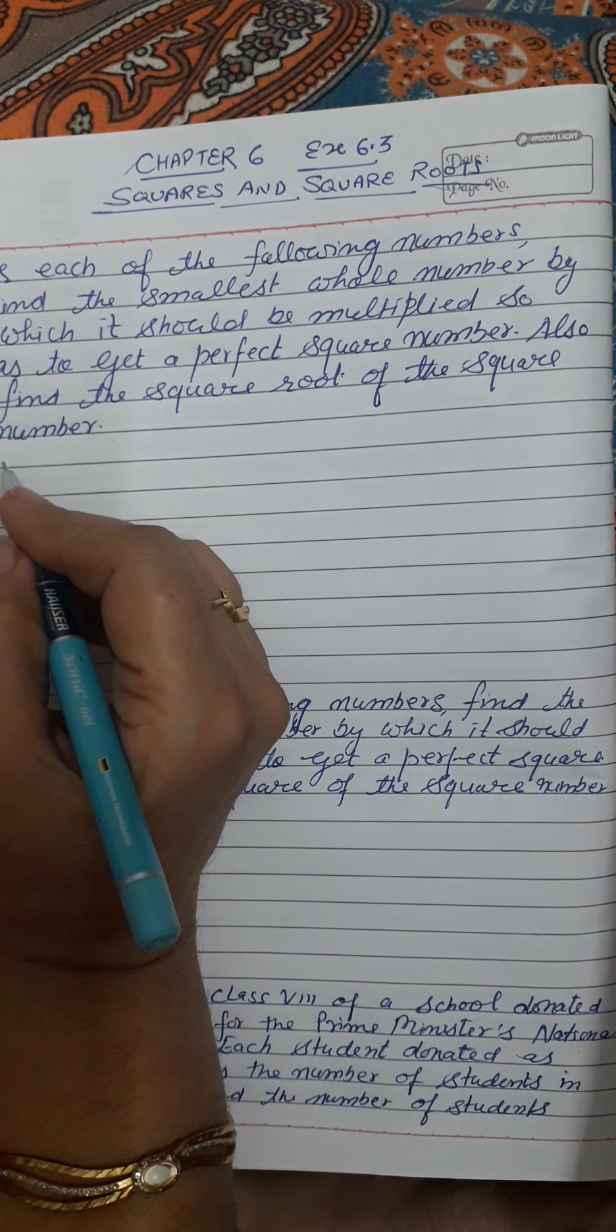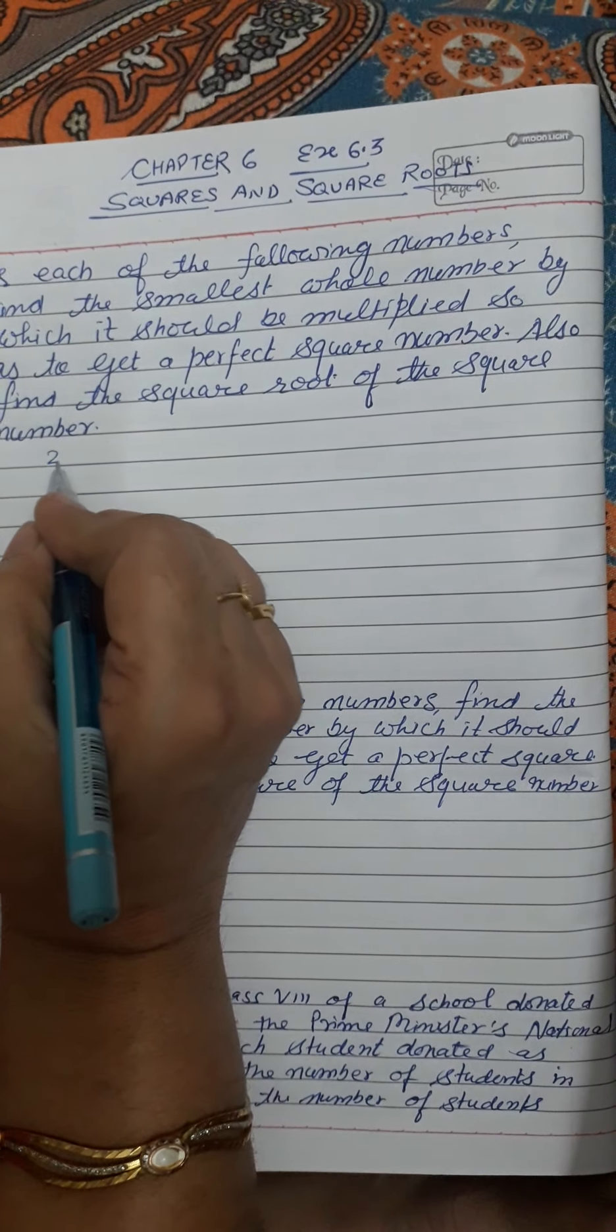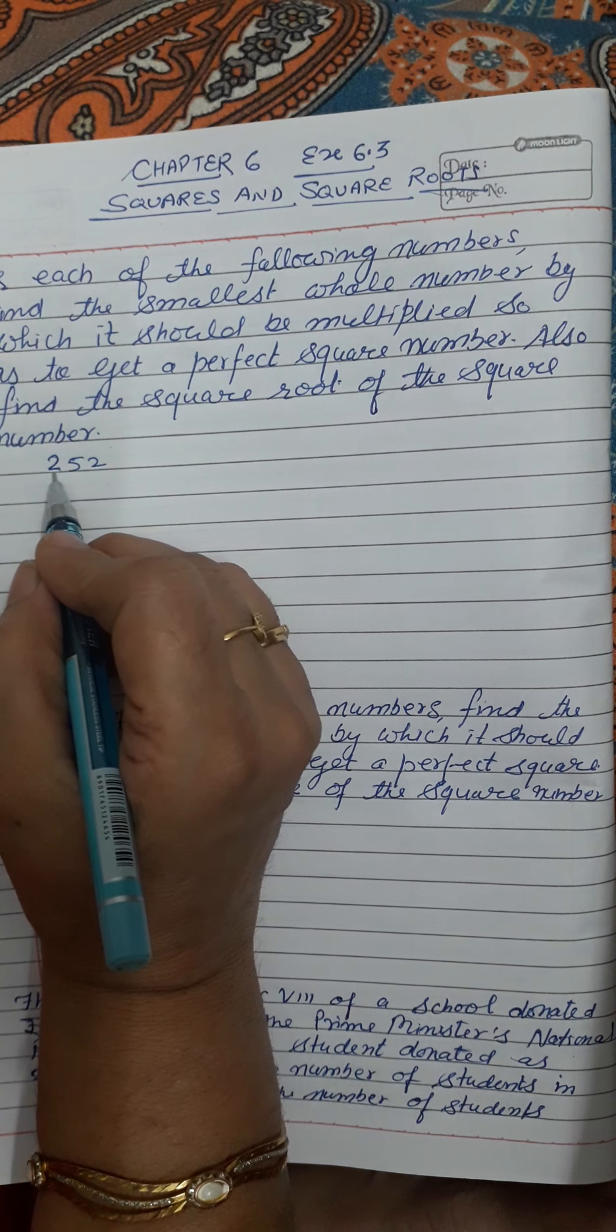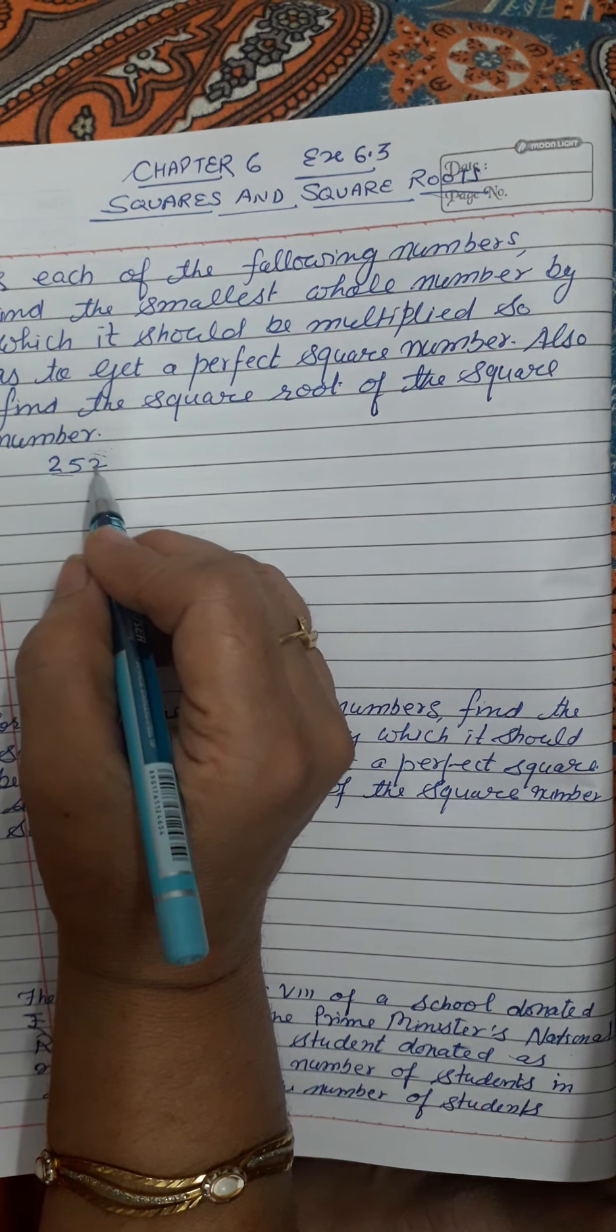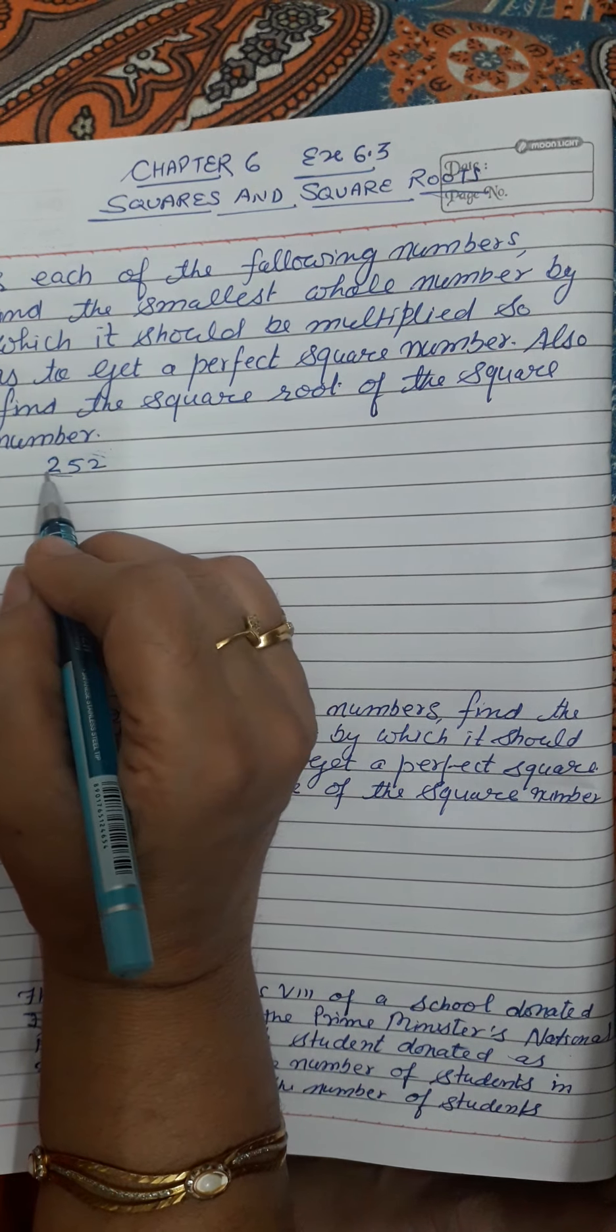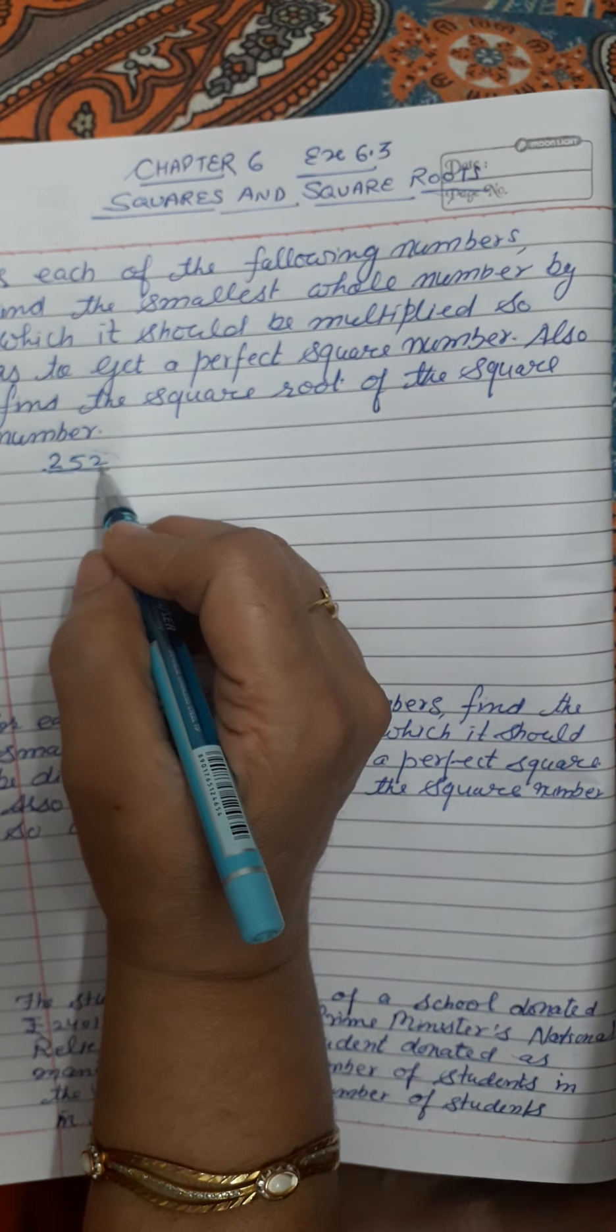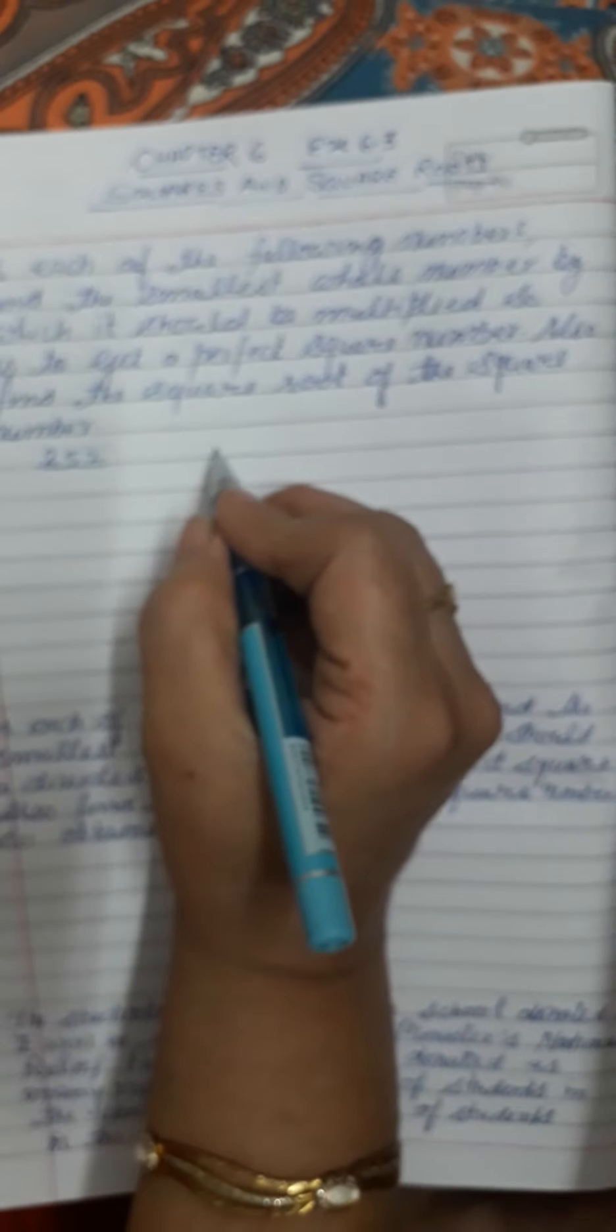So what is the first part? For each of the following, what is the number? 252. This is the first part of this question number 5. Clearly we can see that this is not a perfect square because this 2 is not having any pair. So this whole number is also not a perfect square. If it is not a perfect square, then we should multiply it with which number so it will be a perfect square, and if it is a perfect square, then we have to find the square root of it.